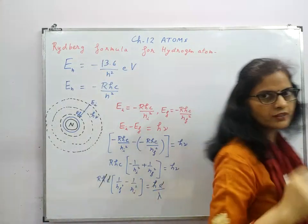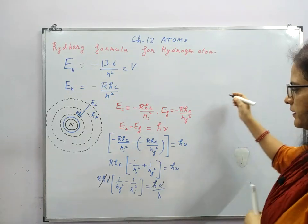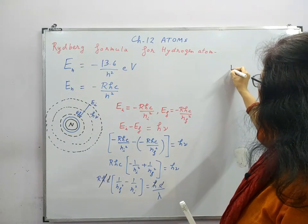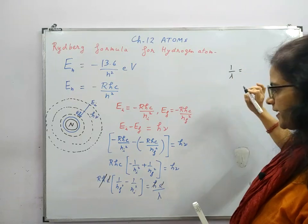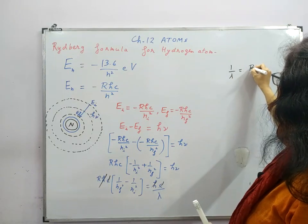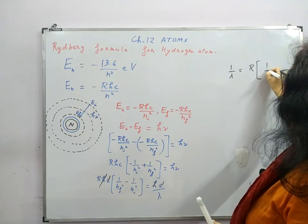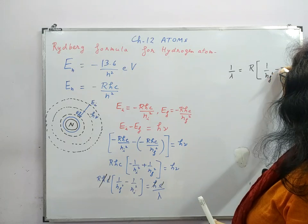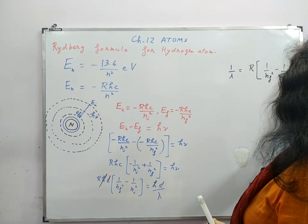So what will be our final form of this formula? We will get 1 upon lambda on one side, and on the other side we have R, 1 by n_f square minus 1 by n_i square.